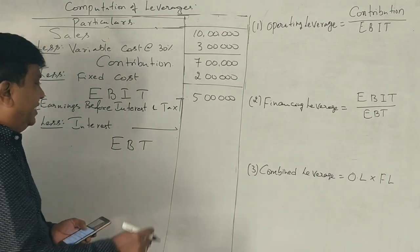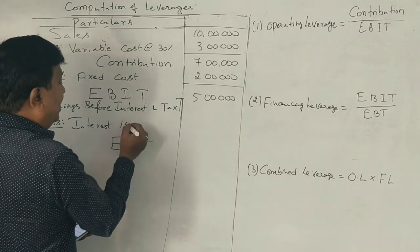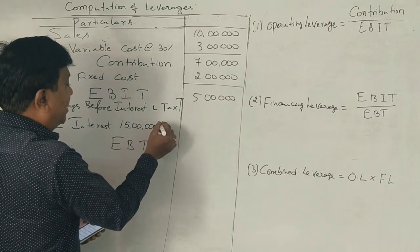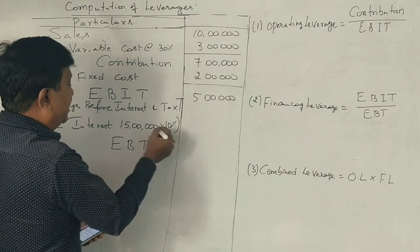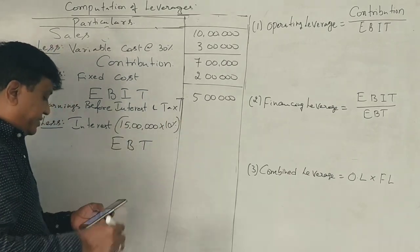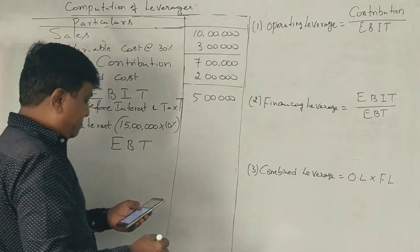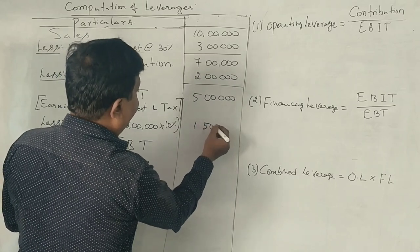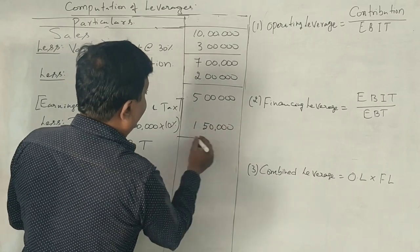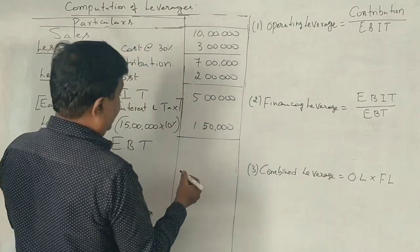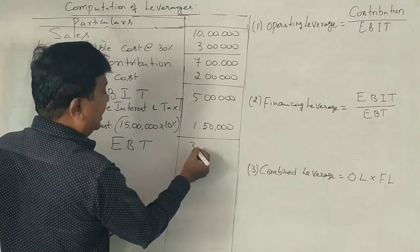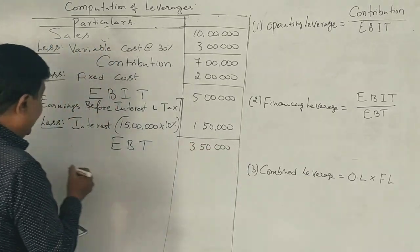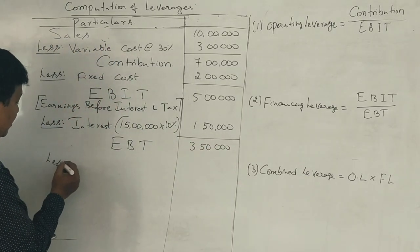The interest is calculated from the total loan taken of 15 lakhs. Every year you have to pay 10% interest on this, which is 1 lakh 50,000 rupees. So EBIT minus interest gives you 3 lakh 50,000. That is your EBT — Earnings Before Tax — of 3 lakh 50,000. The tax rate is also given.